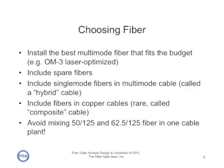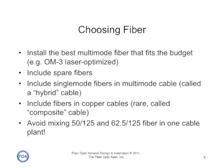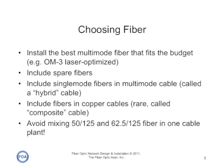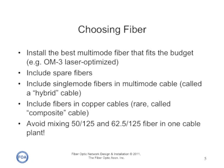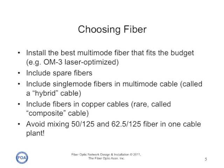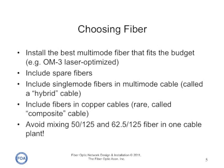In a premises application, we'll generally install the best multi-mode fiber that fits our budget, like an OM3 or OM4 laser optimized fiber. We always include lots of spare fibers — fiber is cheap, but installing cable is expensive. So if we think we're going to expand the network in the future, we always include lots of spare fibers. We sometimes put single-mode fibers with virtually infinite bandwidth in multi-mode cable; we call it a hybrid cable.